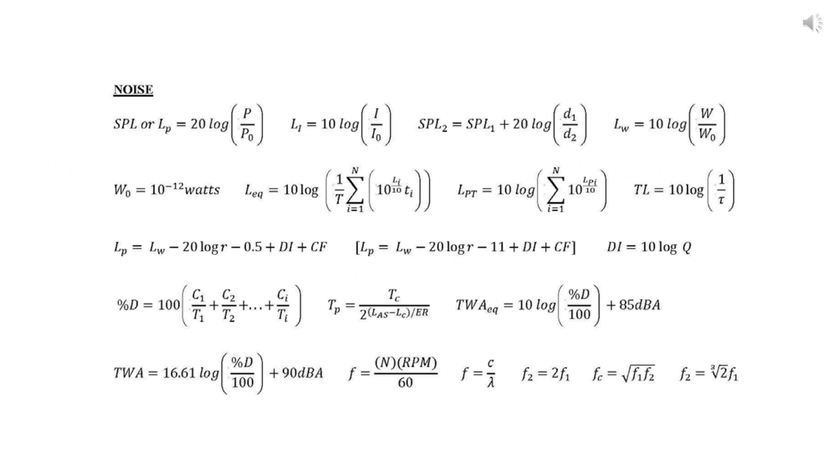The noise section from the CIH Candidate Handbook has 20 equations referenced as useful equations for the ABIH examination. The ABIH is now known as the Board for Global EHS Credentialing. So let's look at the first equation.